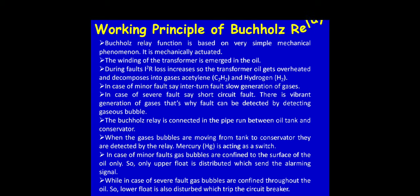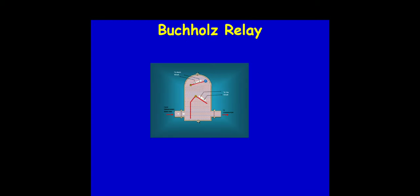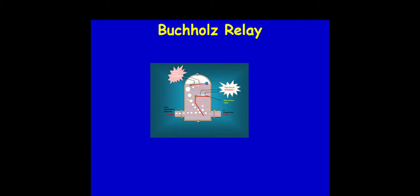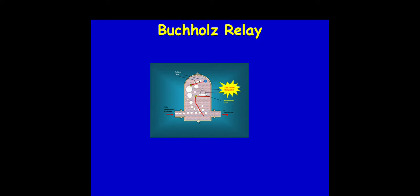The figure shows how the Buchholz relay works. In case of a minor fault, the upper float is activated, but in case of a major fault, the lower float is activated, as shown in the diagram.